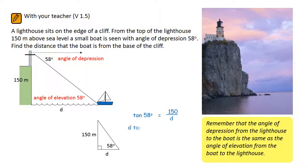Multiply both sides by D. Divide both sides by the tan of 58. And we can get our calculator to work out that D is equal to 93.73 metres.